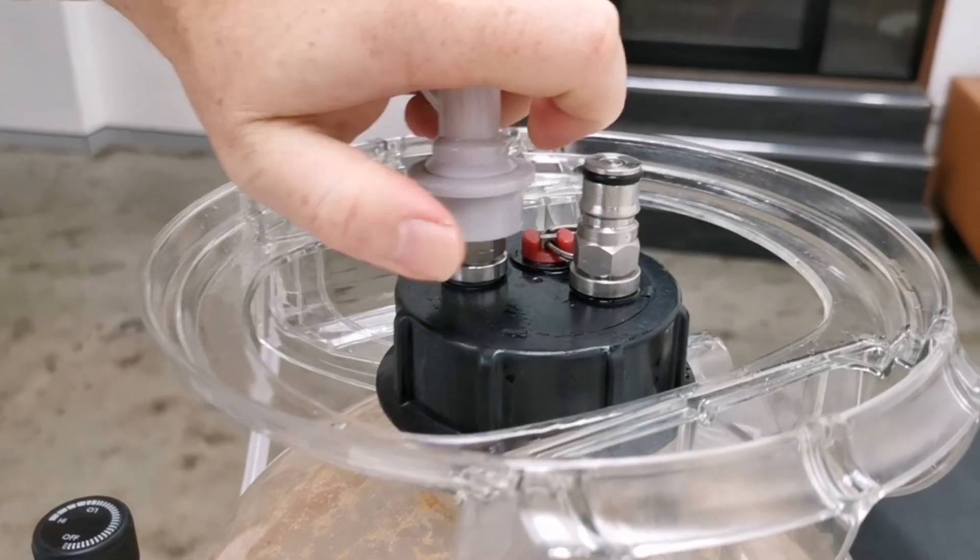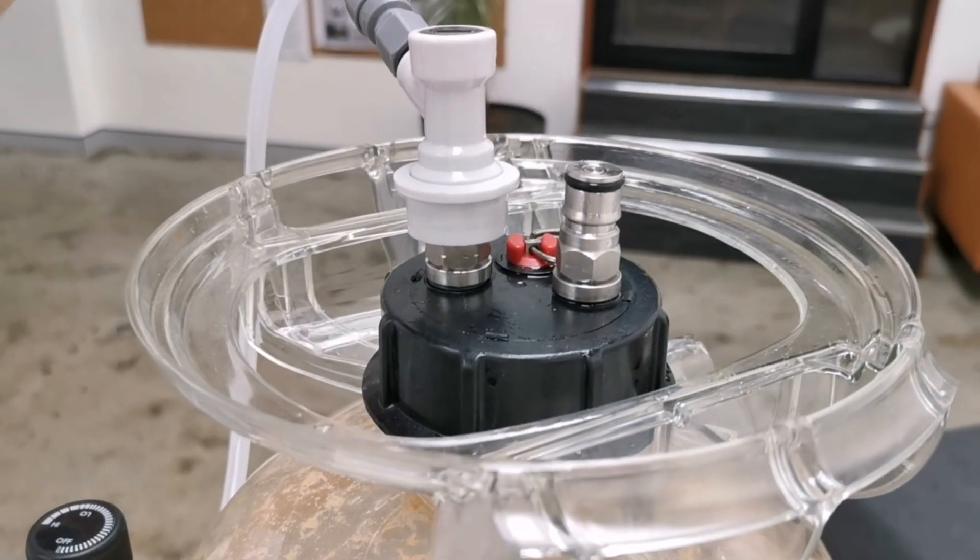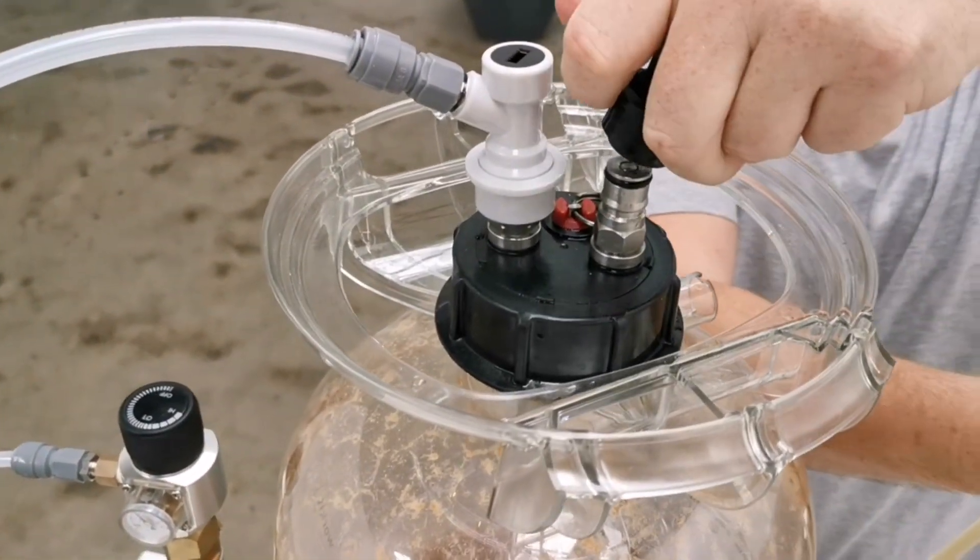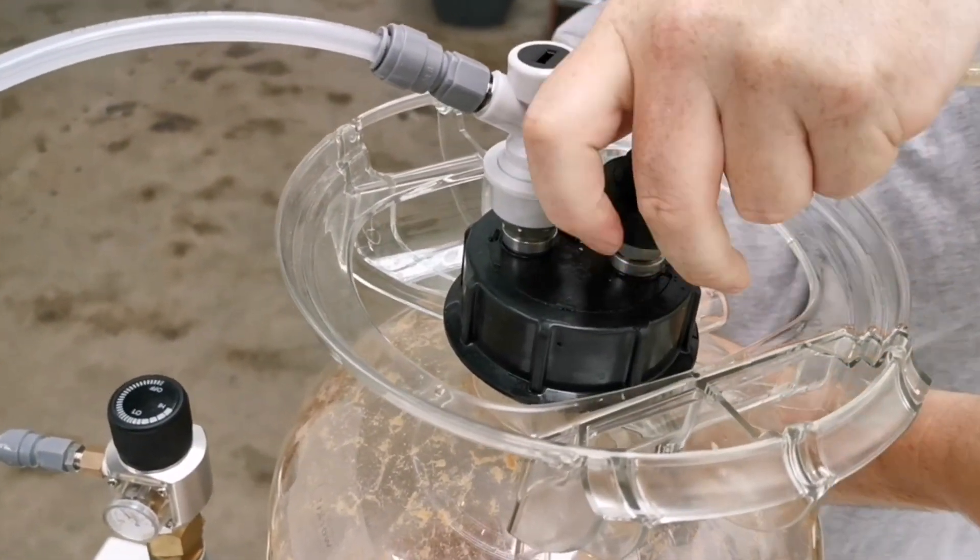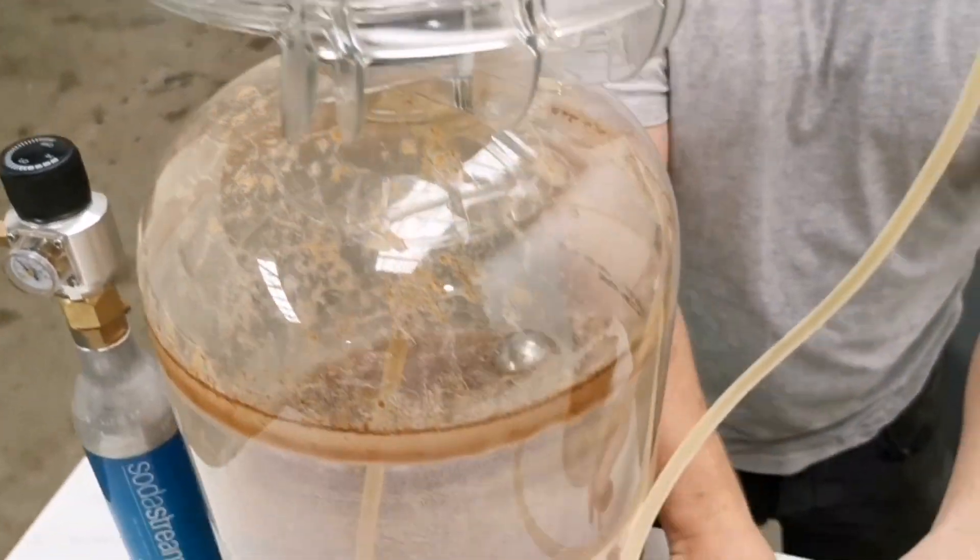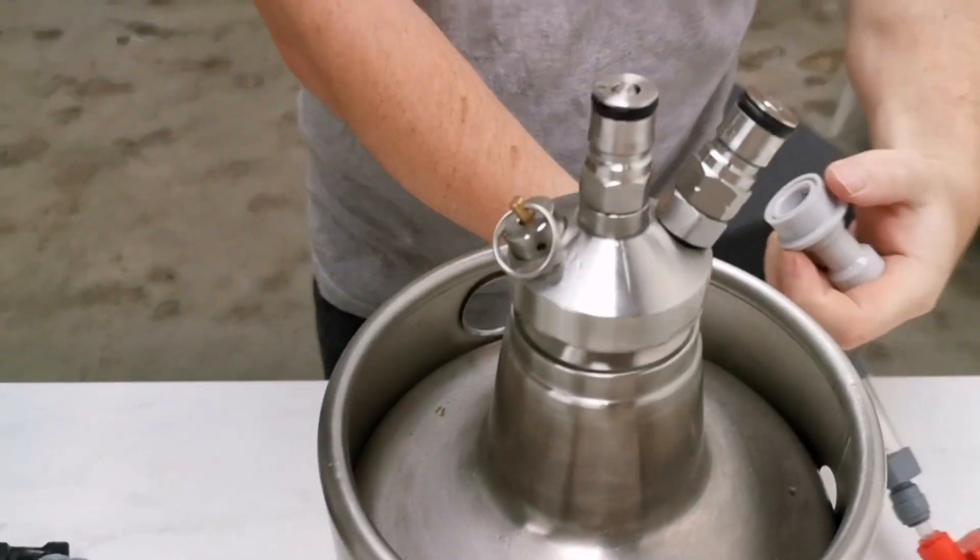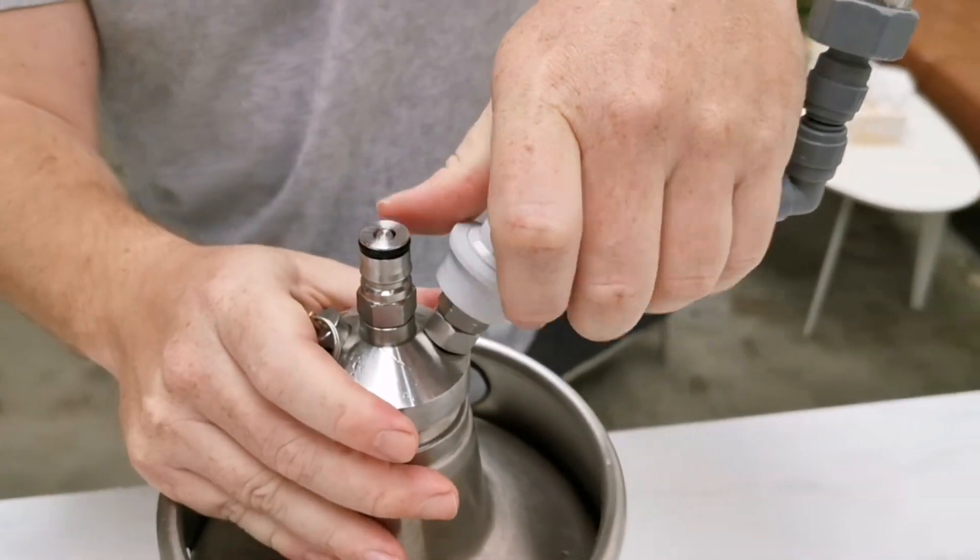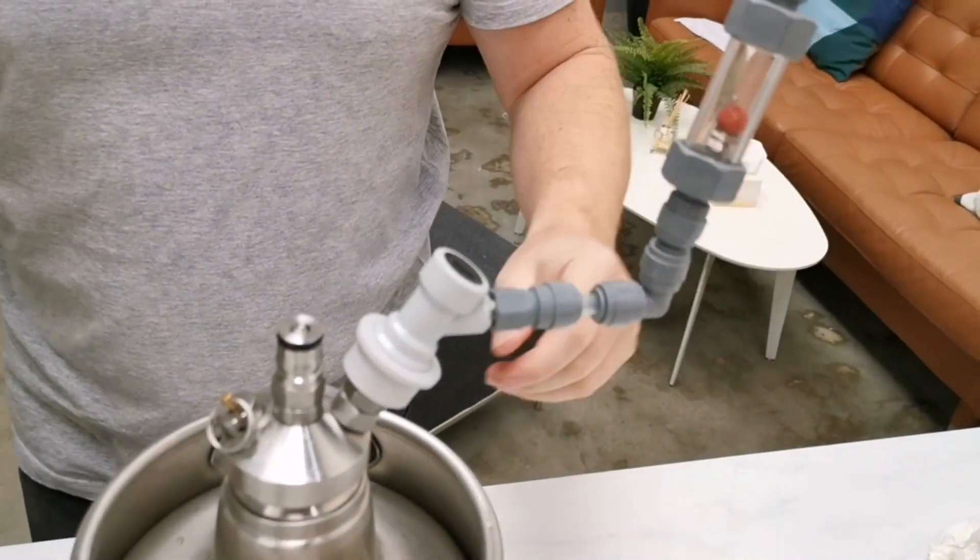After that transfer the regulator to your large full keg. Attach your liquid to liquid beer line connection from the liquid out of your full keg and then attach the flow stopper and spunding valve to the gas outlet of the small keg.